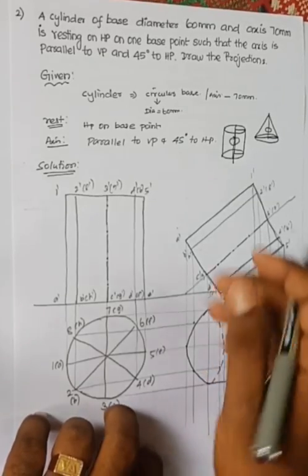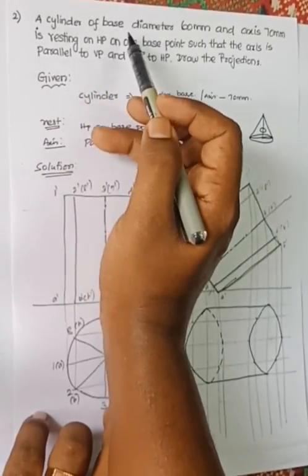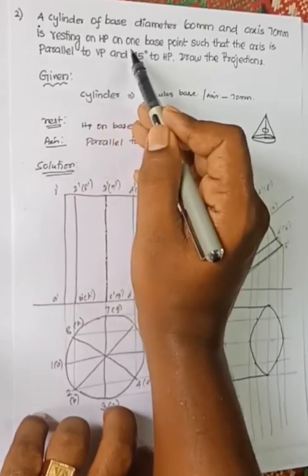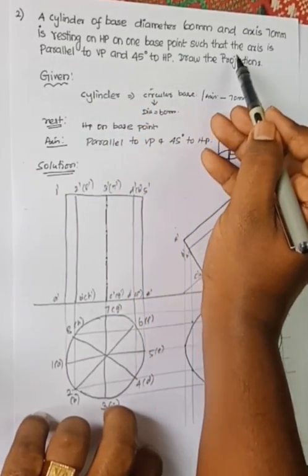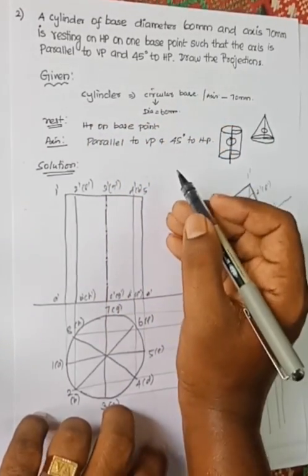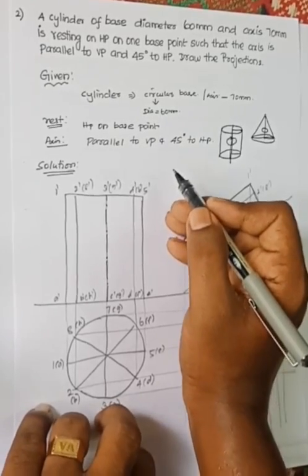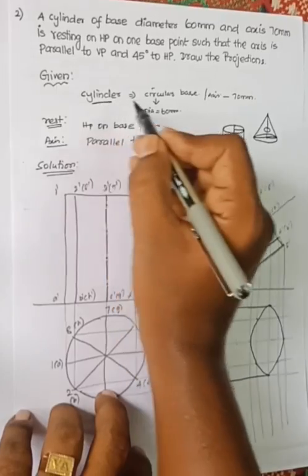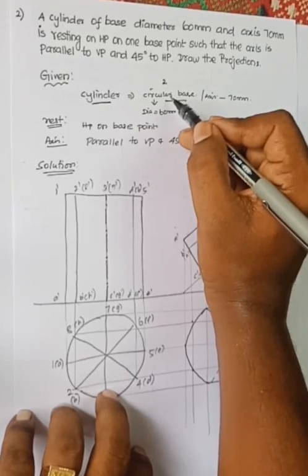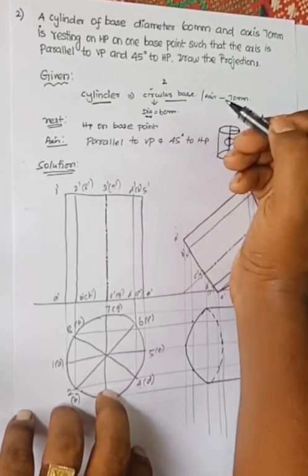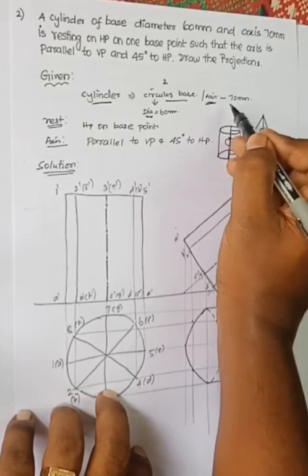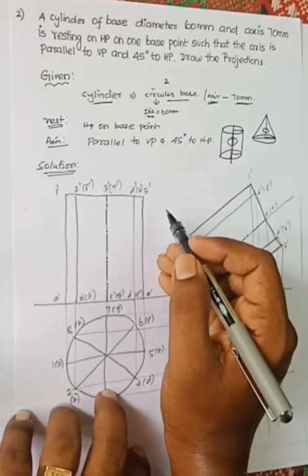The problem is: a cylinder of base diameter 60 mm and axis 70 mm is resting on HP on one base point such that the axis is parallel to VP and inclined 45 degrees to HP. Draw the projections. The given data: solid is a cylinder with 60 mm diameter and 70 mm axis height.